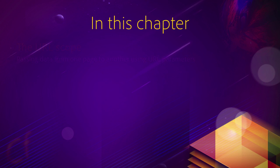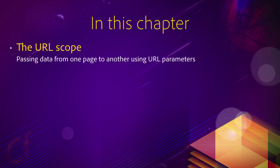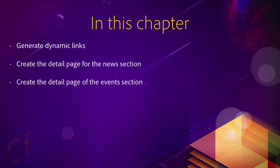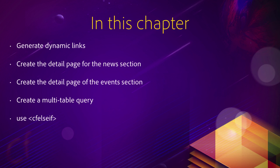In this chapter we will use the URL scope — we will pass data from one page to another using URL parameters. Here is the table of contents for this chapter: we will generate dynamic links, and you will see how you can dynamically generate the data you want to pass from one page to another, from the master to the detail, using URL parameters. Then you will create a detail page for the news section and a detail page for the events section. To do those things you will learn about multi-table queries — querying the database and taking information from multiple tables. You will also use cfelsif to make our cfif and cfelse blocks a little bit more sophisticated. With that being said, let's jump right into Data Drill Down.